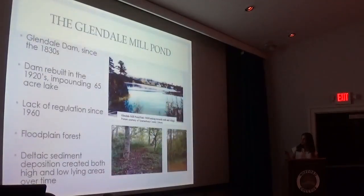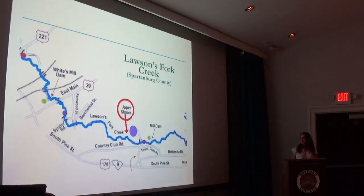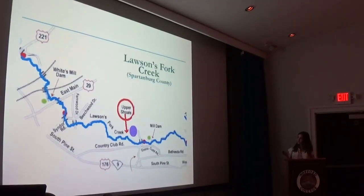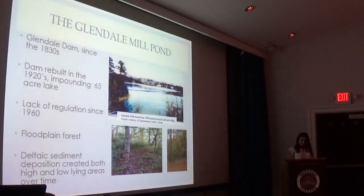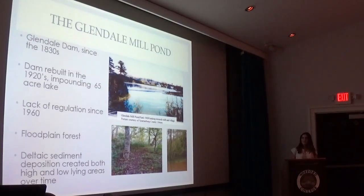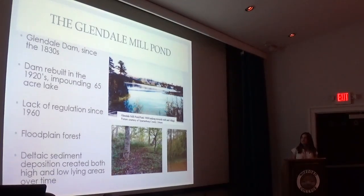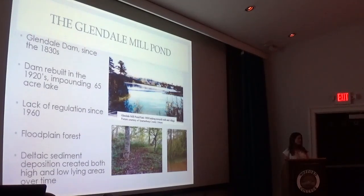There's a dam, which if you have been there you're probably familiar with, and the wetlands that I studied are actually upstream of that dam. The story of records show that there was a dam put in place in about the 1830s, maybe even as early as the 1770s, and after a huge flooding event the dam was actually rebuilt in the 1920s. The rebuilding of the dam created, or impounded, a 65-acre lake that you can see right here. It was mostly used for recreation, fishing, for children, and it was a very big part of the Glendale community.